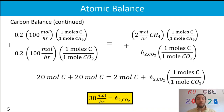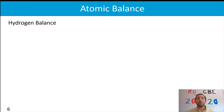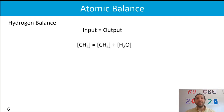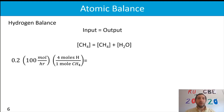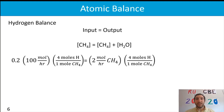Now we move to a hydrogen balance. Again, with steady state and atomic species, the balance is simply input equals output. We identify that hydrogen is present in methane coming in, and in methane and water coming out in stream two. We convert all molecular species into moles of hydrogen atoms: 20 moles of methane coming in, multiplied by four moles of hydrogen per mole of methane. We do the same for methane and water in the output stream.